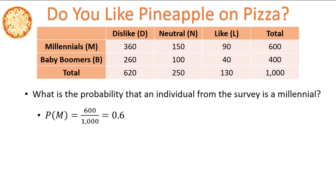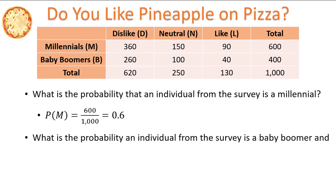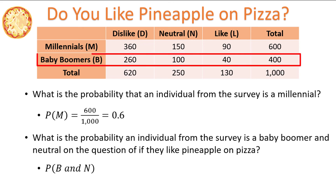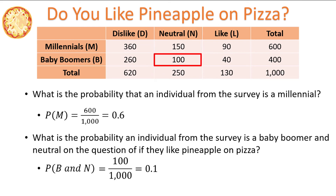How about the probability that an individual from the survey is a Baby Boomer and neutral on the question of whether they like pineapple on pizza? The probability statement is the probability of B and N. For AND probabilities in contingency tables, we find the intersection of the two events — being a Baby Boomer and being neutral. 100 out of the 1,000 surveyed are Baby Boomers who are neutral, which simplifies to 0.1.